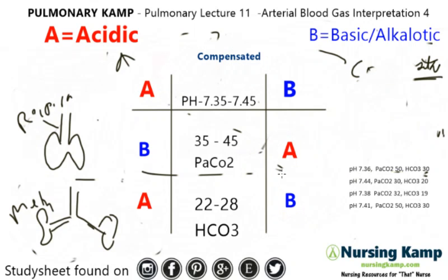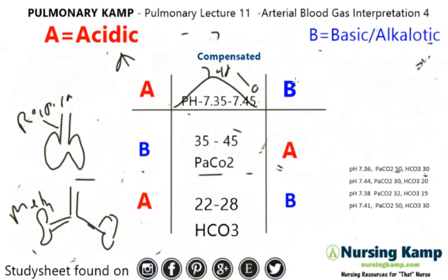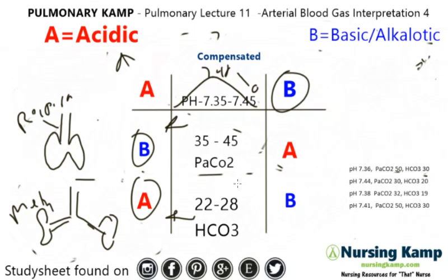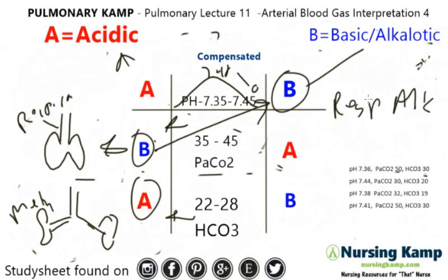Next example: a pH of 7.44. We know 7.40 is the midpoint, so 7.44 is closer to the alkalotic side — we circle B. A PaCO2 of 30, which is definitely on the alkalotic side. A bicarb of 20, also on that side. We connect these two together — we know it's an alkalosis, and this is the respiratory portion. So it's respiratory alkalosis. And because the pH was in the middle, we have compensated respiratory alkalosis.